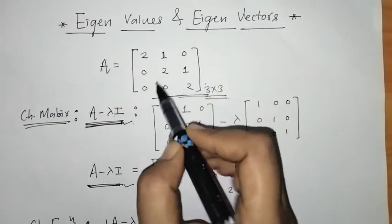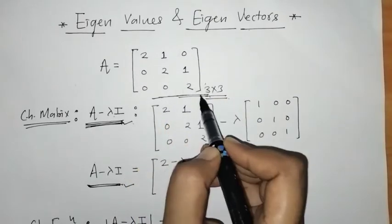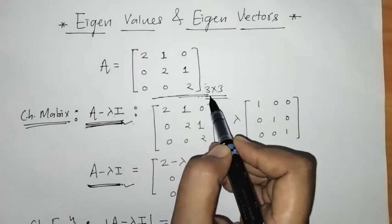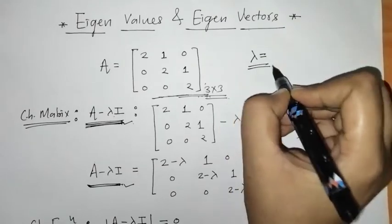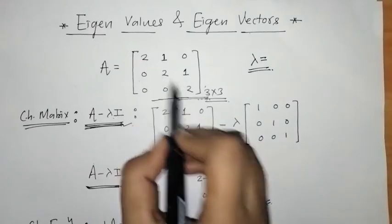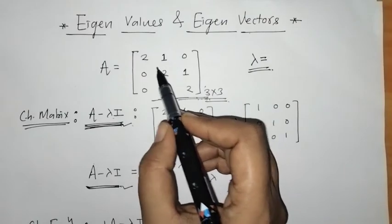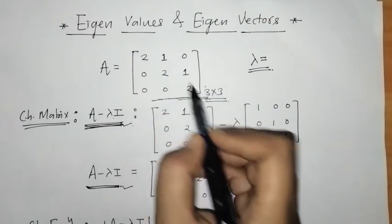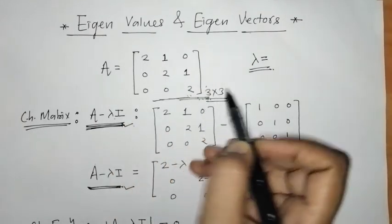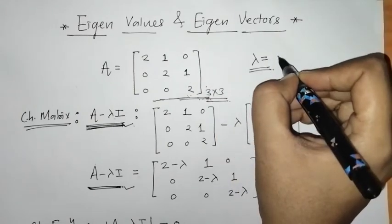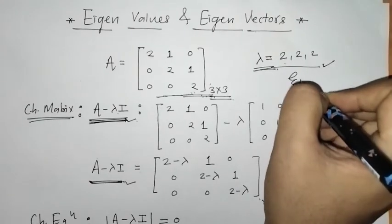We can observe that this matrix is an upper triangular matrix, so by mere observation we can find the eigenvalues — for a triangular matrix, eigenvalues are the diagonal elements. So the eigenvalues are lambda equals 2, 2, 2.